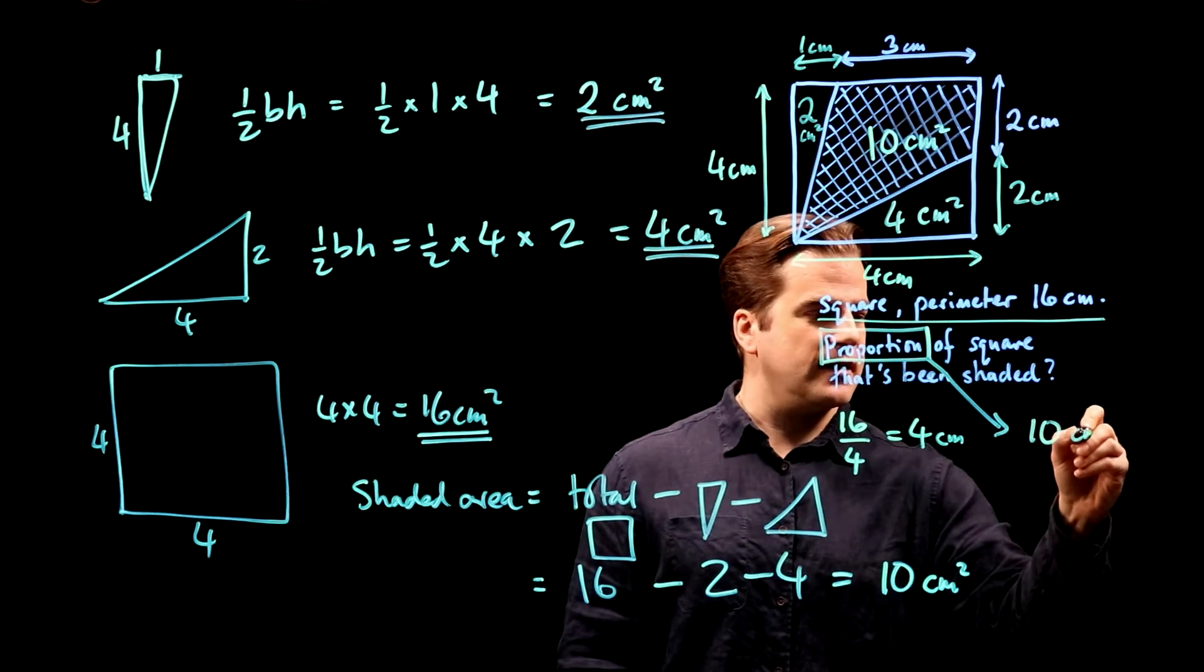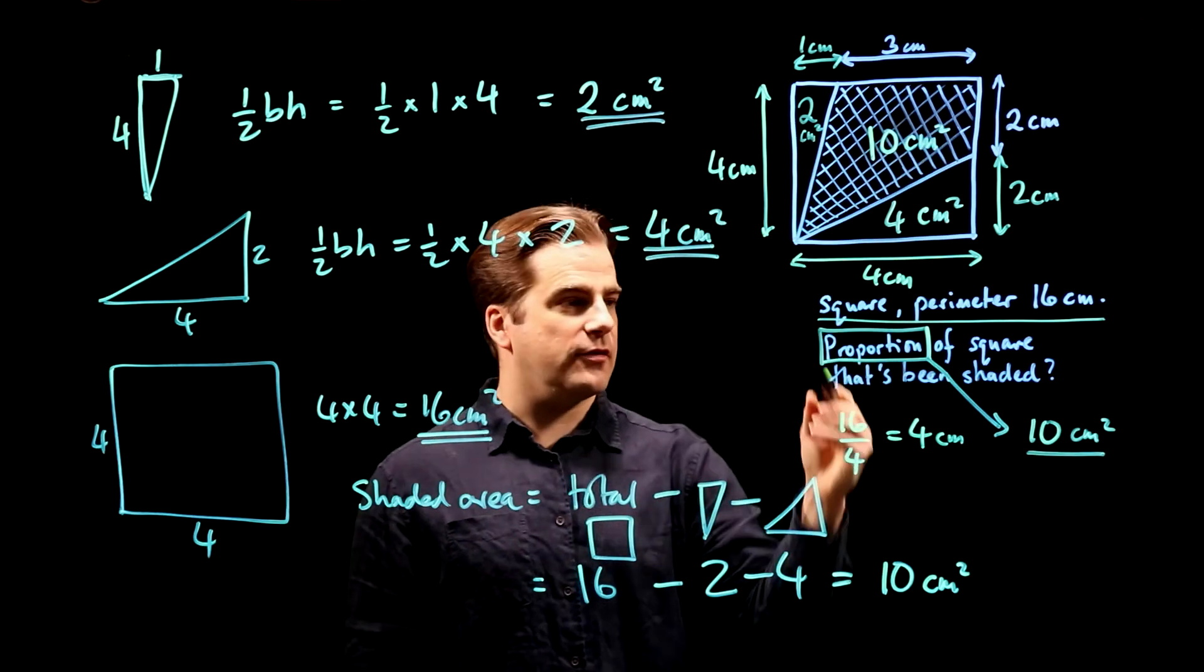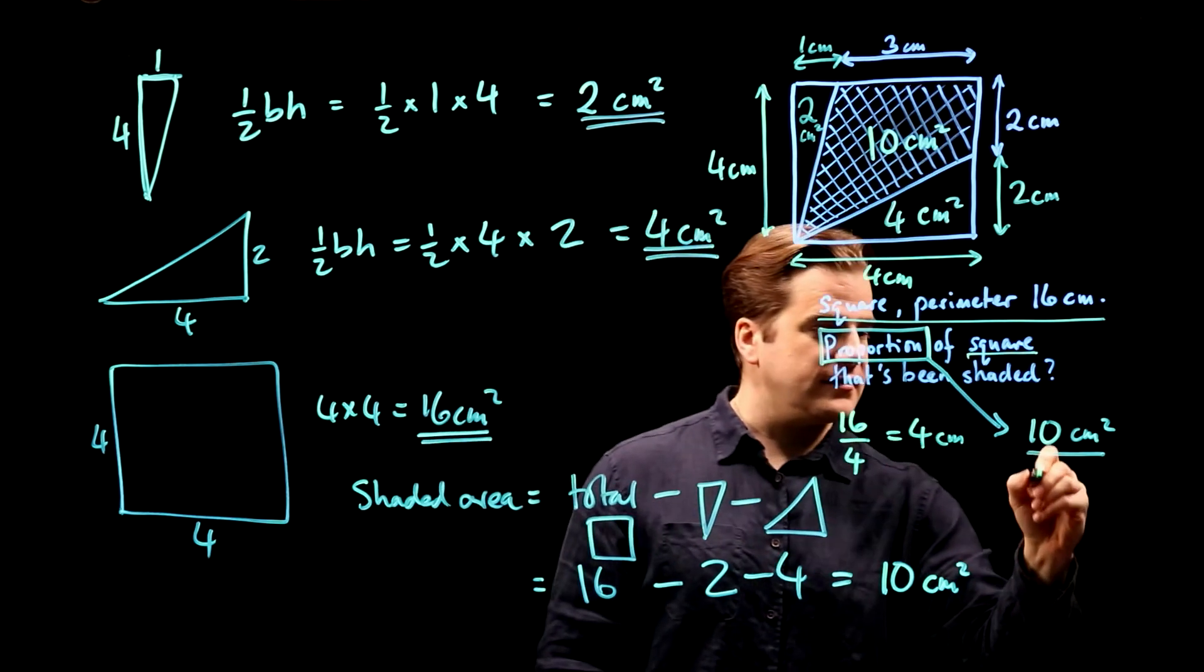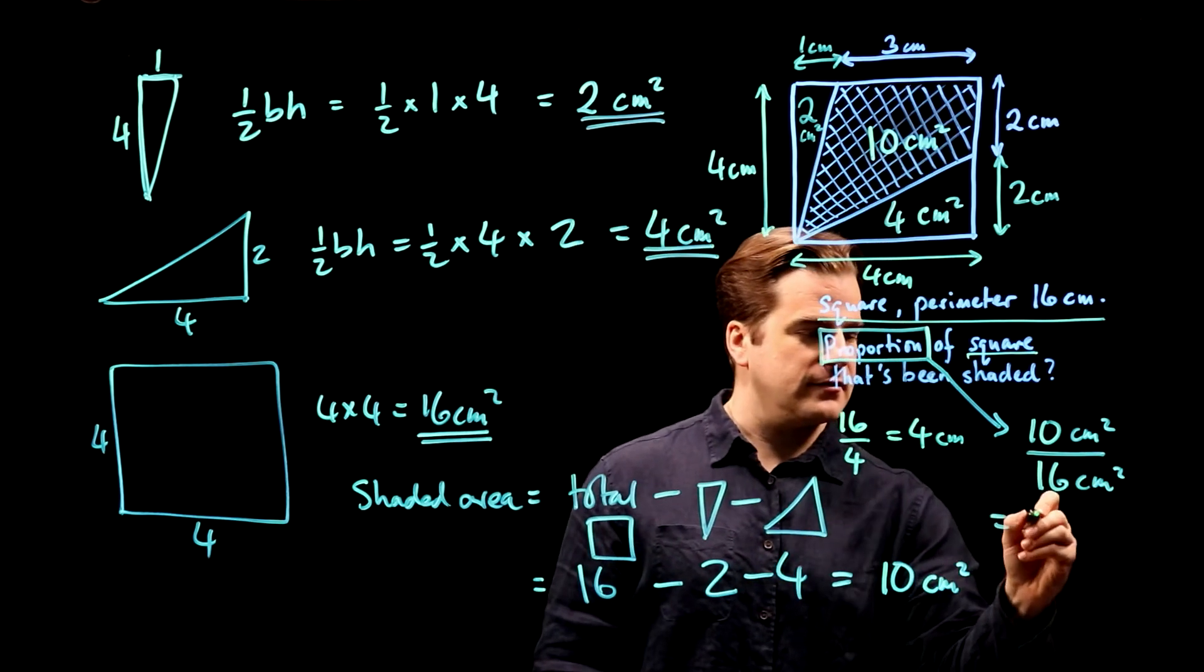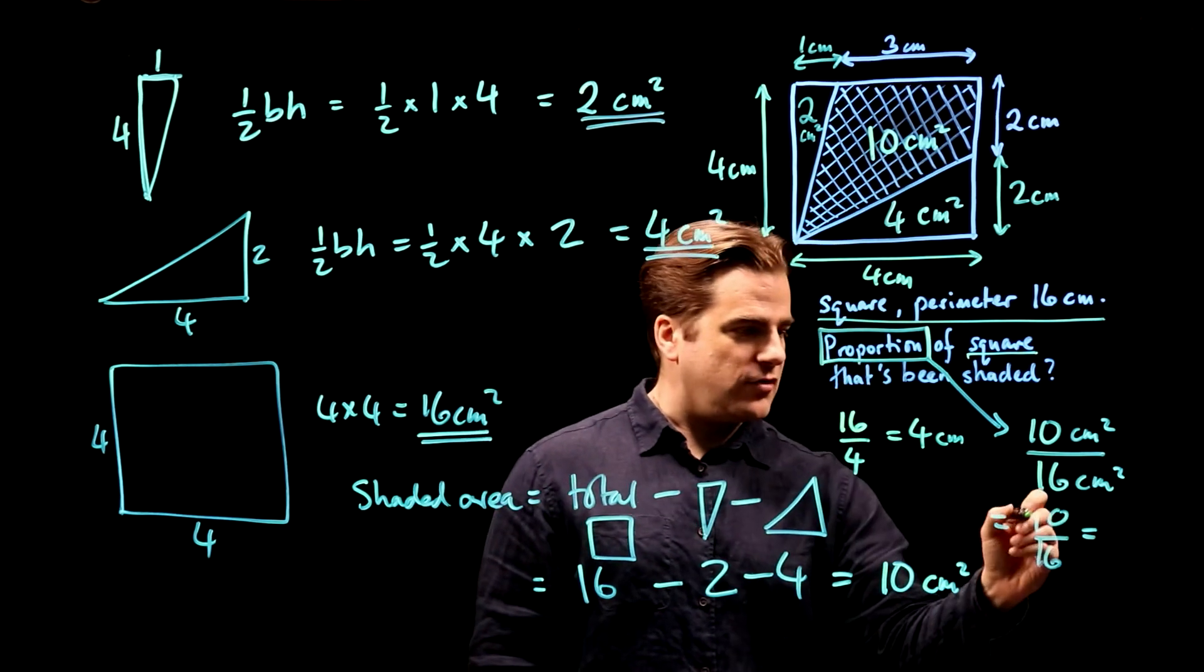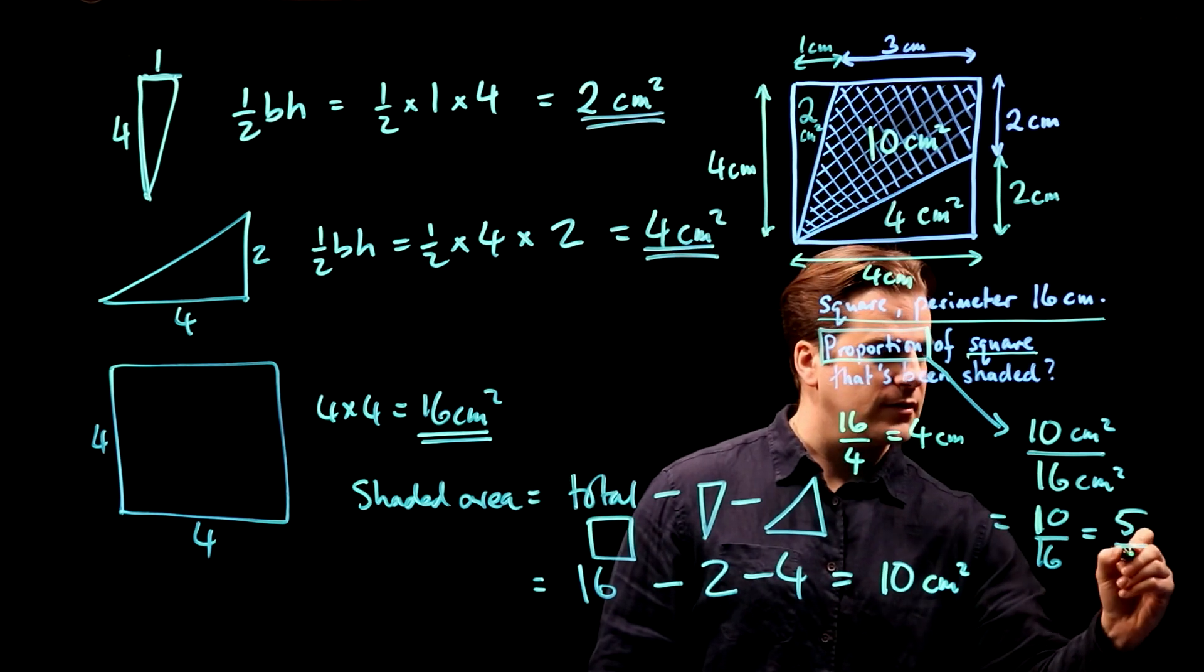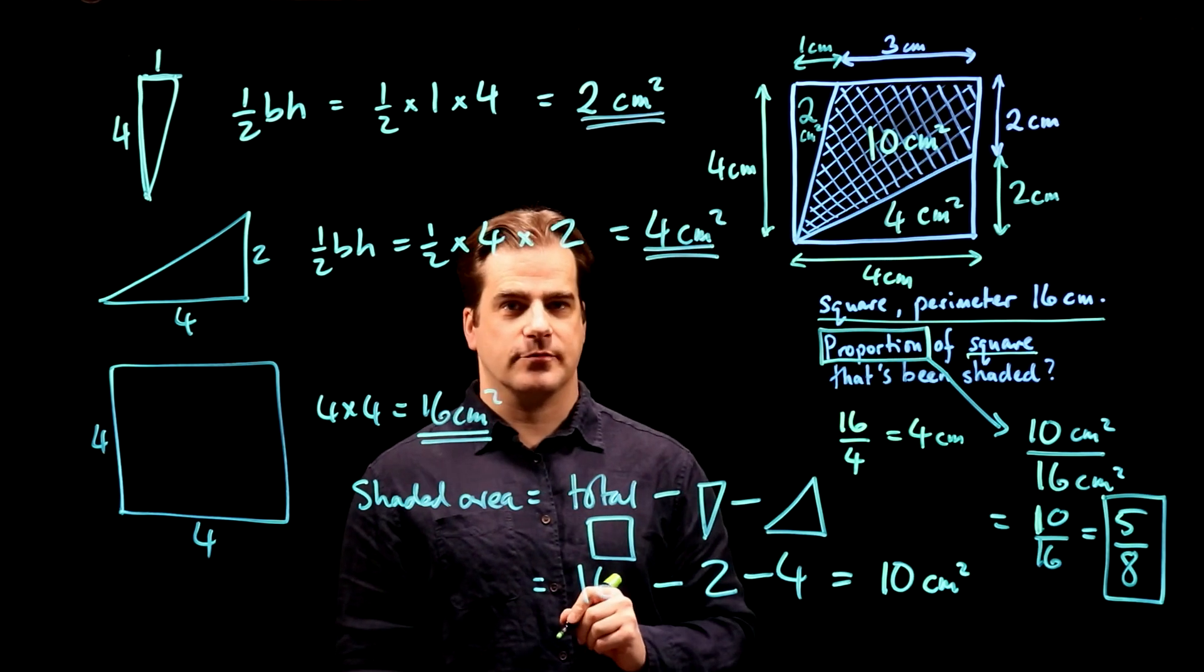So, it's 10 cm squared out of a total, the whole thing, the proportion of the square. So, the square, the whole thing, is 16 cm squared. So, it's 10 sixteenths. 10 sixteenths, which is simplest fraction, divide top and bottom by two, we get five eighths. Boom. There we go. Five eighths.